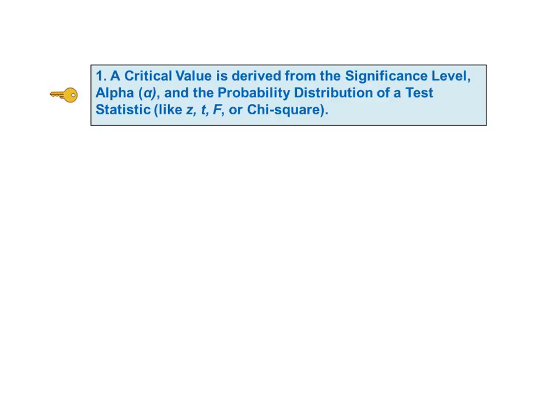Let's now begin our detailed explanation of each key to understanding. KTU number one says: a critical value is derived from the significance level alpha and the probability distribution of a test statistic, like Z, T, F, or Chi-square. There are two concepts in that KTU that we'll need to explain before going further: alpha, denoted by the Greek letter, called the significance level or the level of significance; and secondly, test statistic and its probability distribution.